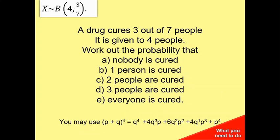A drug cures 3 out of 7 people. It is given to 4 people. Work out the probability that nobody's cured, one person is cured, two people are cured, three people are cured, and everyone is cured. And it gives you a binomial expansion. If you look top left, this is how you model it with modern binomial: doing it four times, chances of successful trial is 3 out of 7.